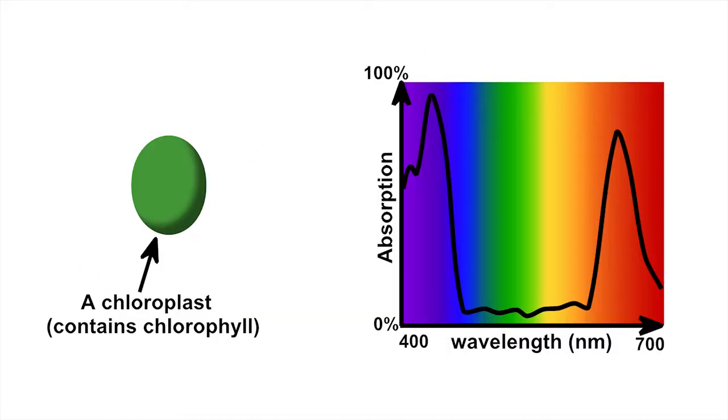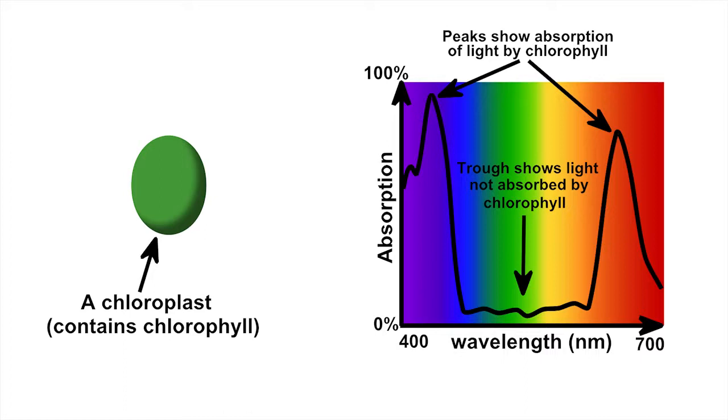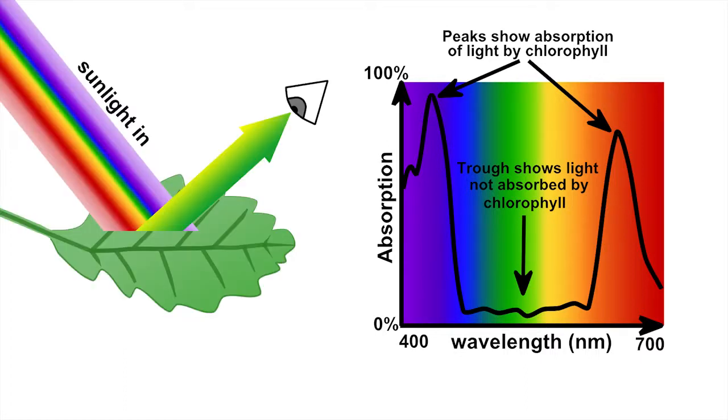The chloroplasts contain chemicals called chlorophyll that absorb the blue-violet and orange-red portions of sunlight but not the yellowish green light. That's why leaves look green. The colors the leaf did not absorb are the ones that reach our eyes.